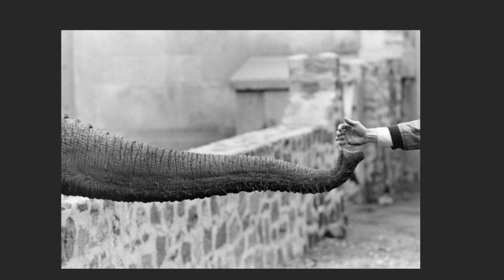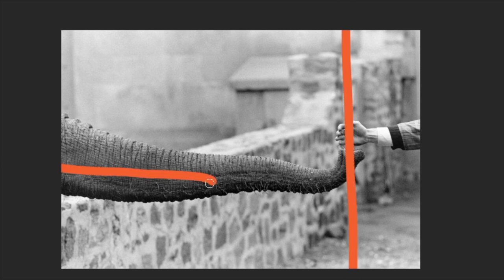In this photograph by Gary Winogrand he's again used humor, but he's shifted the action to the right-hand side. He balances it through the negative space with the horizontal of the trunk, and that's matched by the horizontal up there.